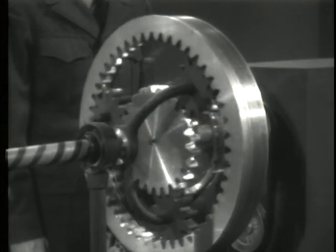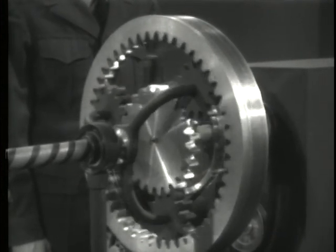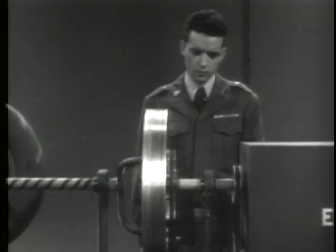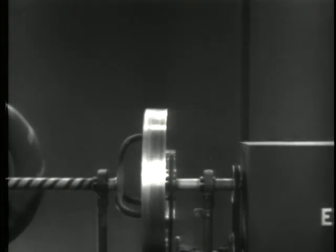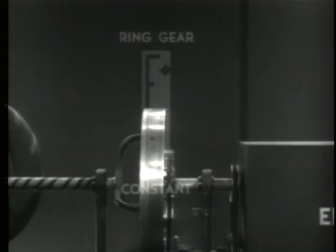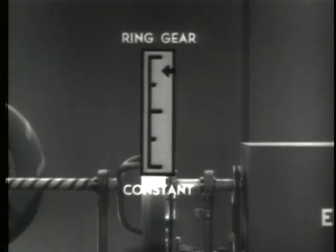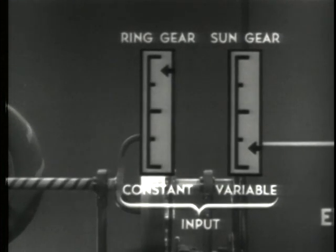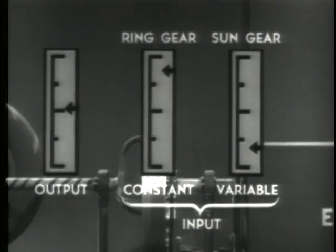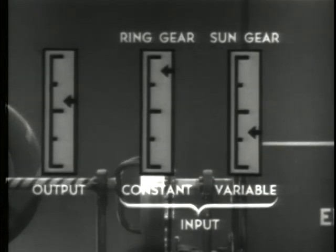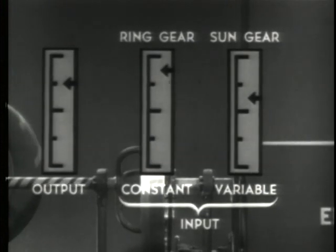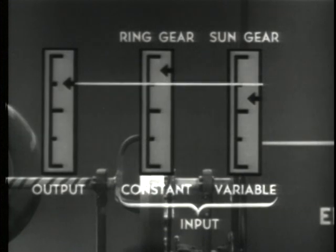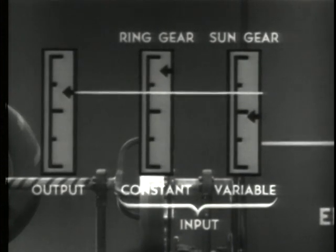First, let's rotate the sun gear in the same direction as the ring gear, which maintains its fixed speed. By the use of indicators we will see the various speeds: the first indicator is connected to the ring gear and its speed will not change; the second is connected to the sun gear whose speed can be varied; and the third is connected to the output. Now let's increase the speed of the sun gear — this results in variation of the output speed. The faster we drive the sun gear in the same direction as that of the ring gear, the greater will be the output speed. No matter how we vary the sun gear speed, the output always stays between the two input speeds.